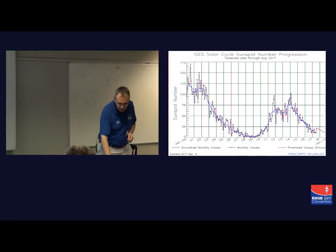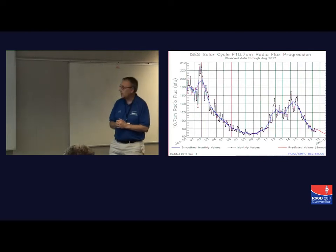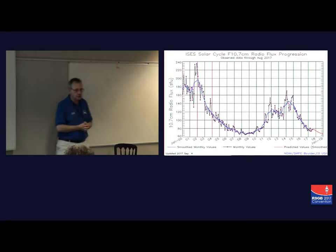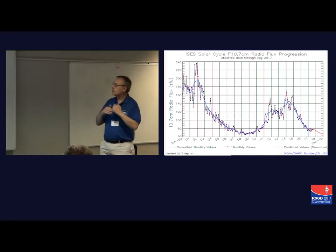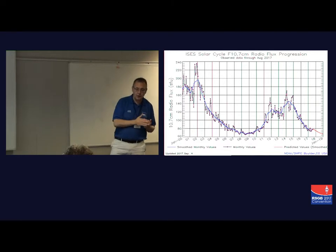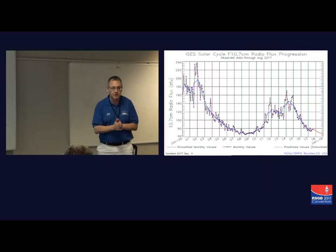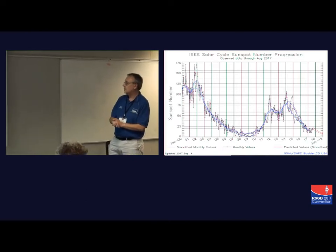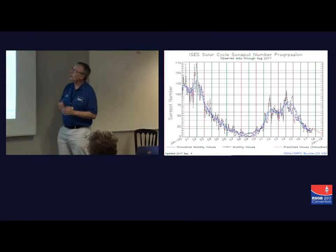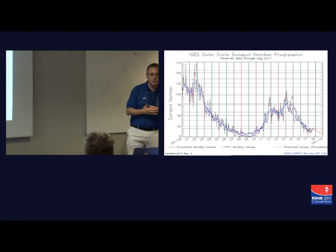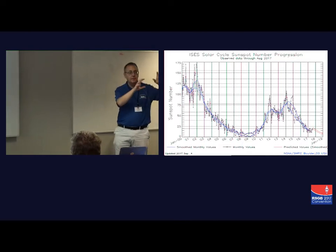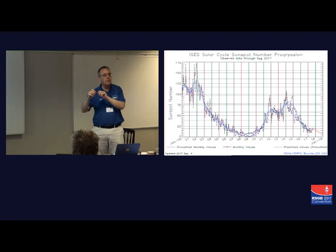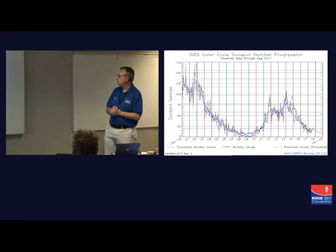Looking at the 10.7-centimetre solar flux index as well, we see that we're heading back towards 2019-2020 again. There is a strong correlation between the smoothed sunspot number and the solar flux index — if we overlay those two graphs, you can see a very good correlation. This is one of the reasons we tend to use the smooth sunspot number with our propagation prediction programs, as we look for monthly means and monthly medians rather than day-to-day variation.